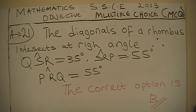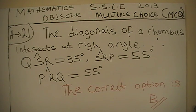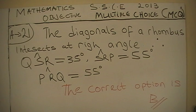Mathematics Senior School Certificate Examination 2013, objective multiple choice question. Answer to question 21: the diagonals of a rhombus intersect...